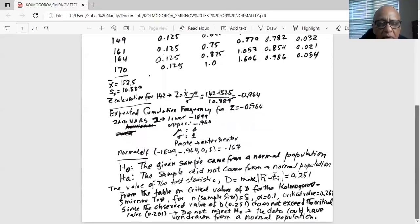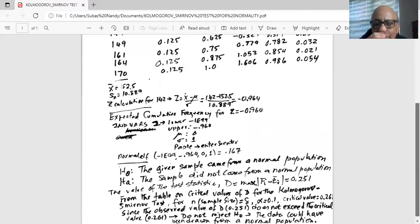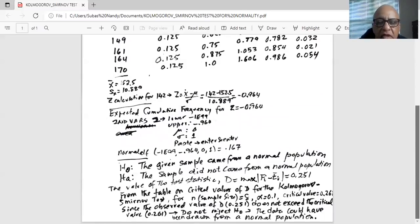So what is my null hypothesis? The given sample came from a normal population. My alternative: sample did not come from a normal population. So the value of the test statistic D for Kolmogorov-Smirnov test is the maximum value of the difference between actual cumulative frequency minus expected cumulative frequency. In this case, it is 0.251.